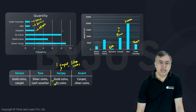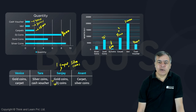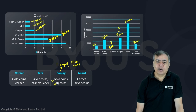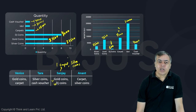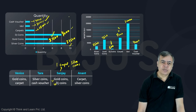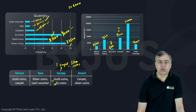DJ coins: 500 into 8 = 4,000. Gold coins: 7,500 into 5 = 37,500. Silver coins: 2,500 into 9 = 22,500. Adding them all: 37,500 + 22,500 = 60,000; plus 18,000 + 8,000 = 26,000; total comes to 1,06,000. So this is the total worth of all items.